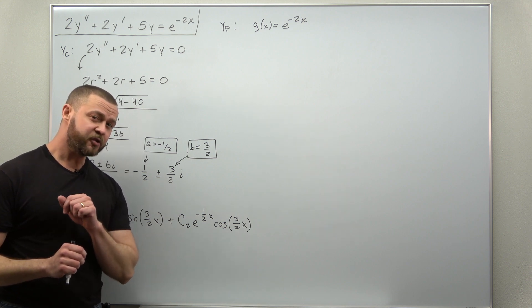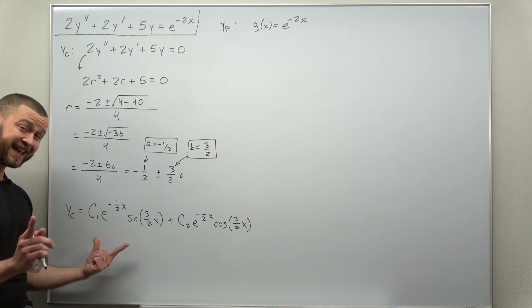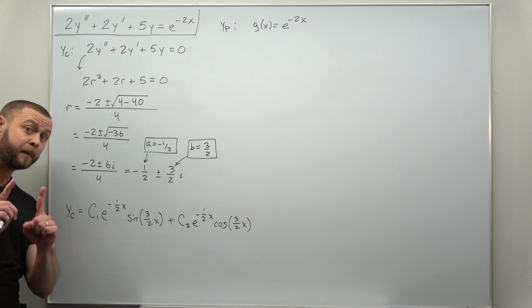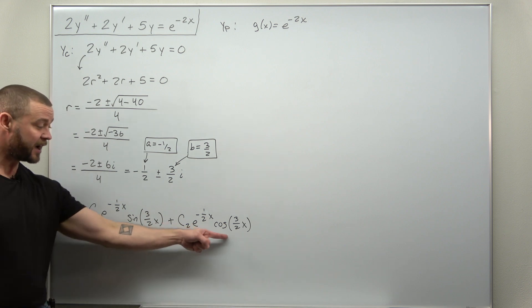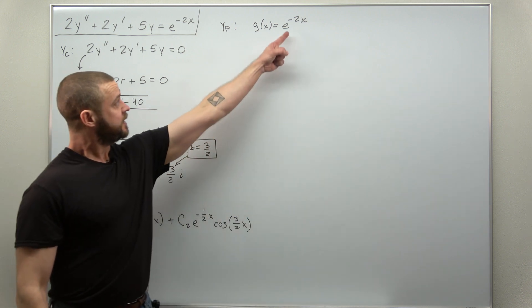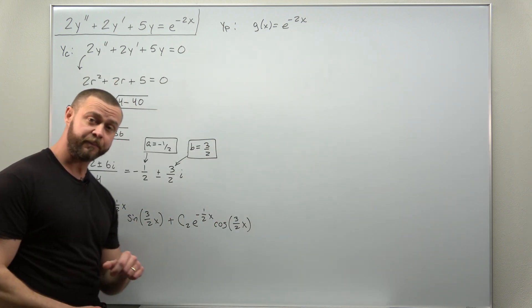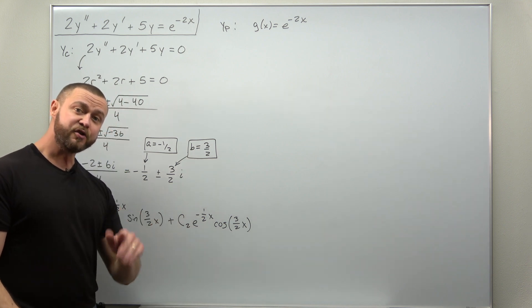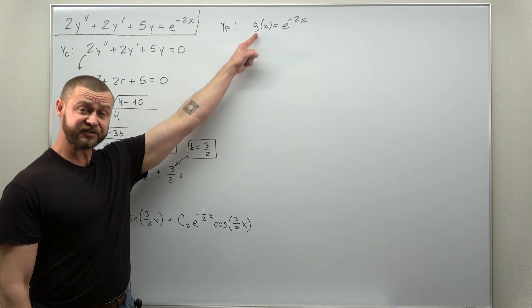g of x is an exponential function. Our complementary solution contains exponential functions, but it's not duplicated. Our complementary solution has exponentials multiplied by sine or cosine. This doesn't duplicate either of those terms.